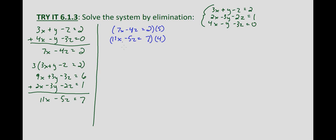So 5 times 7x gives 35x, minus 20z, equals 2 times 5 which is 10. Then 4 times 11x gives 44x, minus 20z, equals 7 times 4 which is 28.